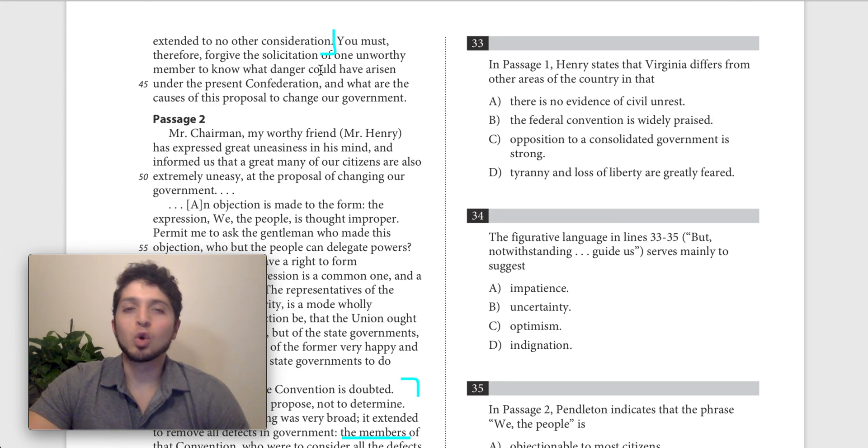This is sort of like a rhetorical apology. You know, forgive my asking. He doesn't mean it. Obviously, it's just something rhetorical that he's using to make his point that there's no danger that we should have replaced the confederation. Why are we proposing to change our government if there's no danger? Please tell me what danger it is.